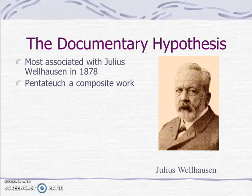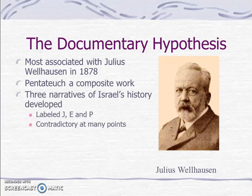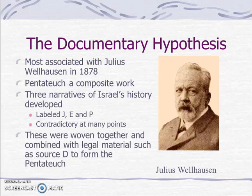He held that the Pentateuch was a composite work, that three narratives of Israel's history had developed, which he labeled J, E, and P, which were contradictory at many points. These were woven together and combined with legal material from a source called D to form the Pentateuch as we now have it.